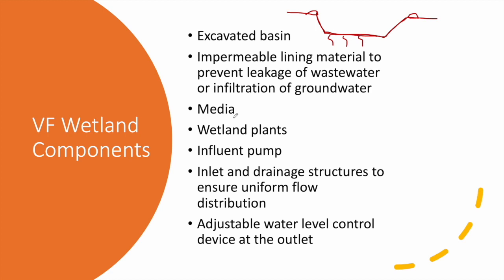Then we add the filtering media, which consists of two thin layers of gravel — one at the top and one at the bottom. The main treatment media between these two gravel layers consists of sand. Then we plant the wetland reeds, whose rhizomes will help in the wastewater treatment.